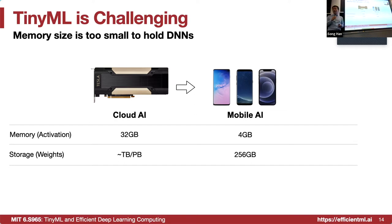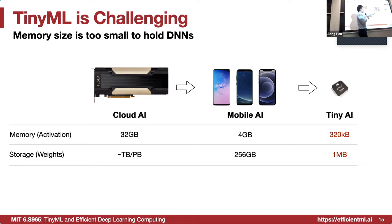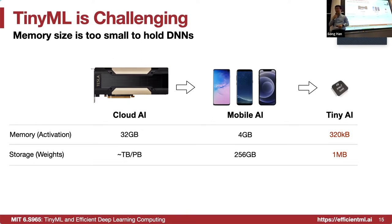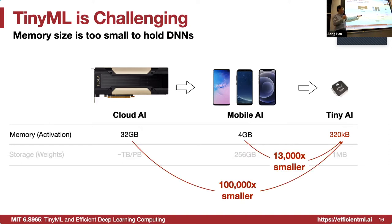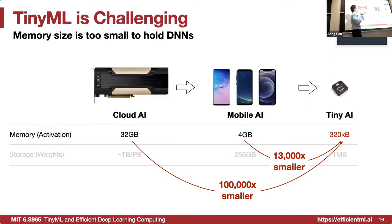Let's talk about the difficulties. Cloud AI and mobile AI can easily get gigabytes of memory, but for microcontrollers, the SRAM and flash are super limited — 320 kilobytes of memory for activation, and about one megabyte of storage for weights. There are three to four orders of magnitude fewer memory resources. There is no prior art about neural network design for tiny scenarios, so we need to rethink the design space and methodology for such a tiny environment.